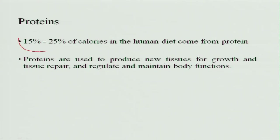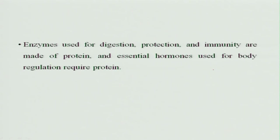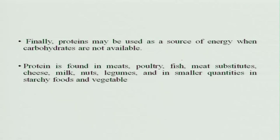Proteins: we need to obtain 15 to 25 percent of total calories from proteins. They are used to produce new tissues for growth and repair, and to regulate body functions. Enzymes are also proteins and are used for digestion, protection, and immunity. The essential hormones that regulate the body are also derived from proteins. Proteins may also be used as a source of energy when carbohydrates are not available.